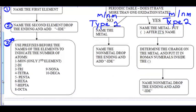If you have one atom, you use mon, but only for the second element. If you have two atoms, whether it's first or second element, you use di. Three atoms is tri, four is tetra, five is penta, six is hekta, seven is hepta, eight is octa, nine is nona, and ten is deka.